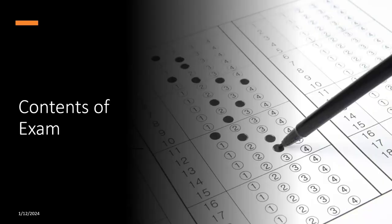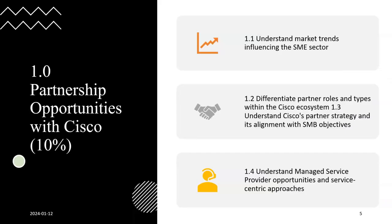Let's see the contents of this exam. There are 11 different parts: nine parts are worth 10 percent each, while the remaining two parts are five percent each. We will see what the 10-percent and the five-percent domains are. The first part is Partnership Opportunities with Cisco.